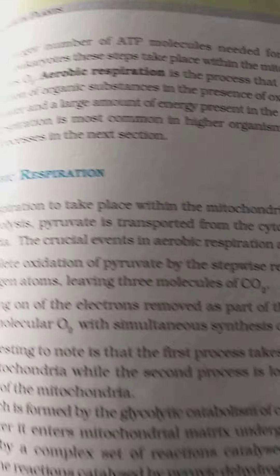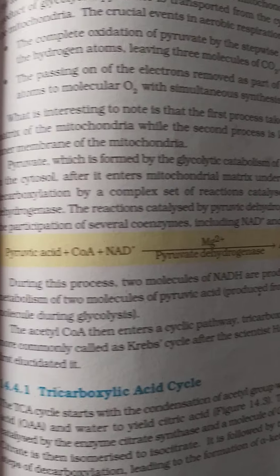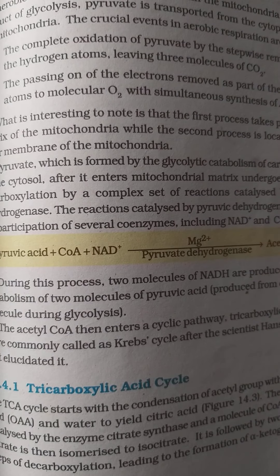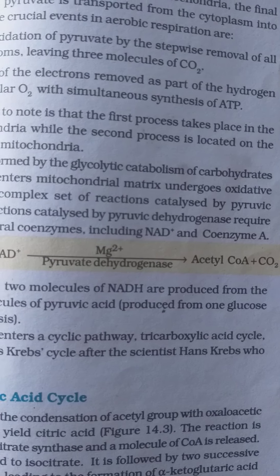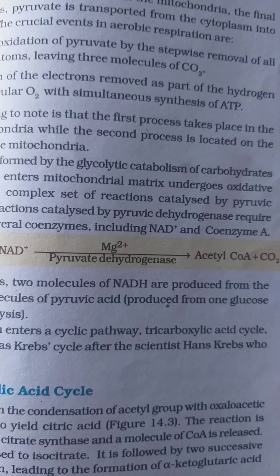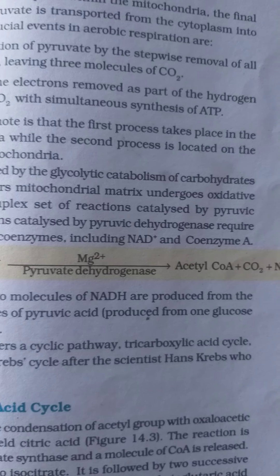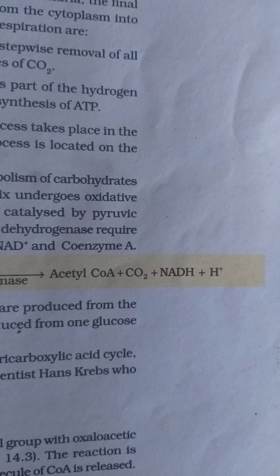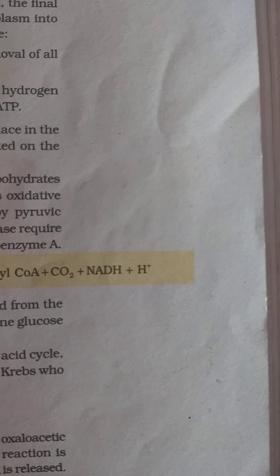As you can see in your book: pyruvic acid plus coenzyme A plus NAD, with magnesium ions and the enzyme pyruvate dehydrogenase, yields acetyl coenzyme A plus carbon dioxide plus NADH plus a hydrogen ion.